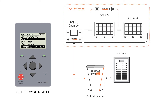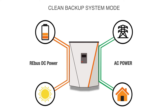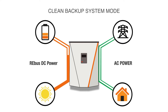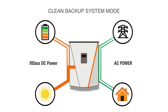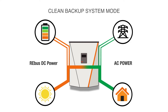For systems with a battery, clean backup is a mode which prioritizes keeping the battery fully charged with solar energy. Once all connected PowerCell batteries are charged, available solar energy will be converted to AC current to support local loads and for grid export. The battery will stand by fully charged, waiting to support loads in the event of an outage.